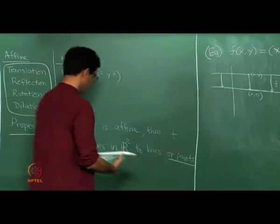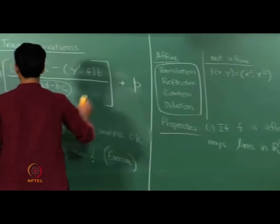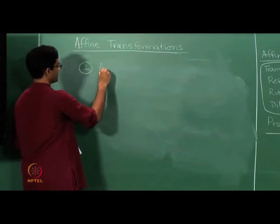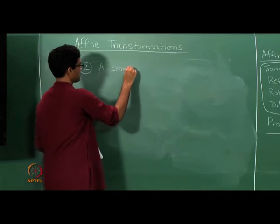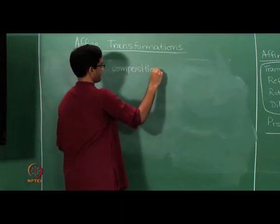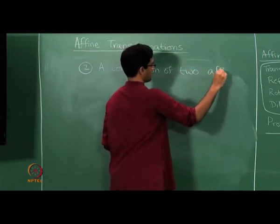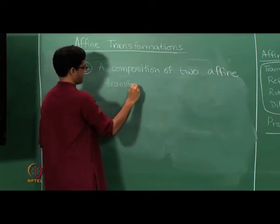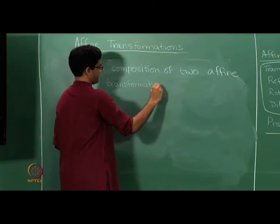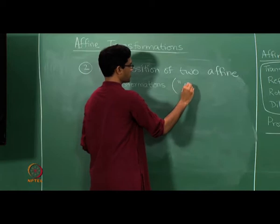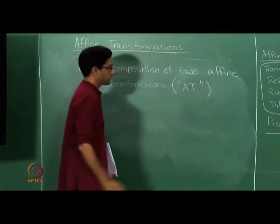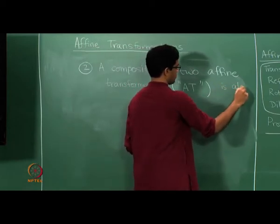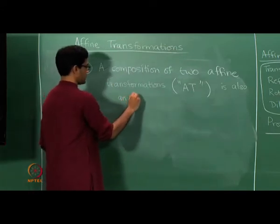This only happened here because ad − bc = 0. In all the previous examples, ad − bc was non-zero, so lines always mapped to lines. Now let us look at property number 2 of affine transformations: a composition of two affine transformations is again affine.